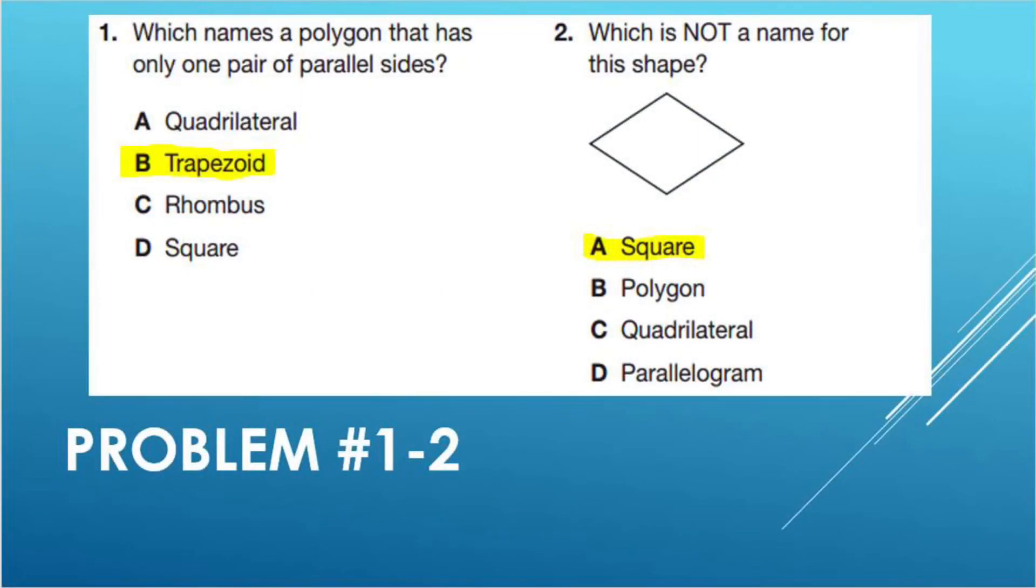For number one, our answer is B: trapezoid. This is our answer because a trapezoid is a quadrilateral or polygon that only has one set of parallel sides.